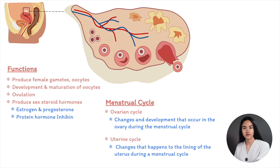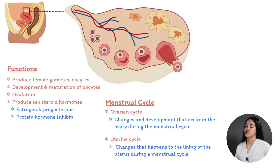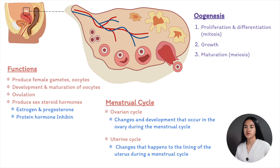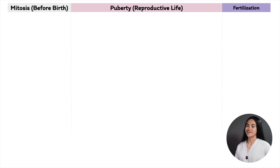Now let's break down oogenesis. Oogenesis is the formation of an ovum in females and it occurs in the ovaries. Similar to spermatogenesis, it involves a series of cell phases, which we can divide into three main stages: the multiplication phase by mitosis, the growth phase, and the maturation phase, which involves the meiotic divisions.